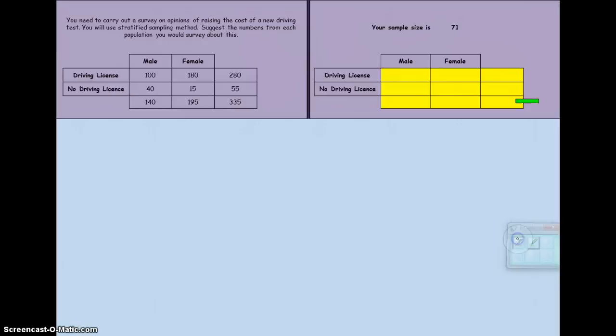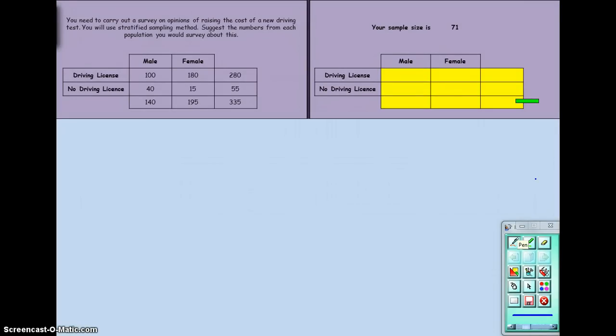So, for example, let's first of all have a look at the number of males we might need. So the number of males that we have in our original population is 140 out of a total of 335 people.